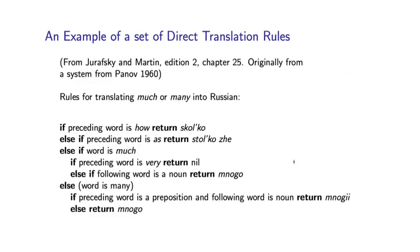Here's an example of a set of direct translation rules. This is taken from the Jurafsky and Martin textbook, and it's originally from, I think, a Russian system from 1960. It's actually, I think, fascinating to look at this. So this is a set of rules for translating the word much or many in English into Russian. And so you can imagine that somebody, some human, has looked at a lot of example translations, or maybe just used their intuition about the two languages, to derive a set of rules for how to form this translation based on the surrounding context.